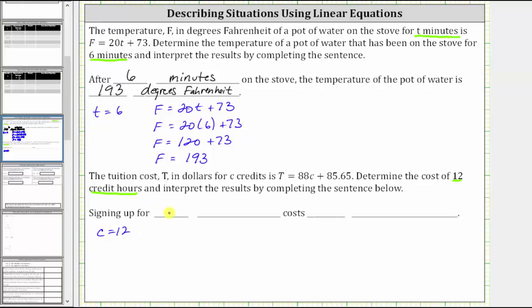We also know the tuition cost T equals 88C plus 85.65.